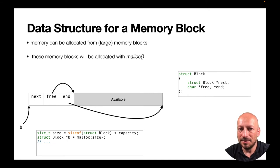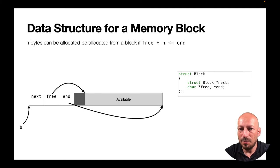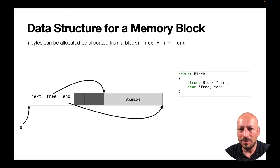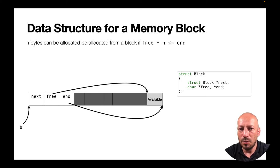To allocate n bytes from a memory block, check whether free + n exceeds the end pointer. If not, return the original free value and increment free by n. You can allocate multiple times this way until the memory block is exhausted. Then you need to allocate another large memory block and think about how to organize these blocks in a linked list.